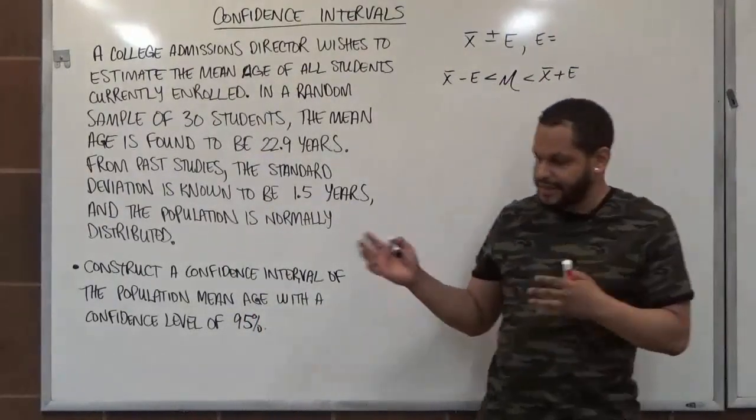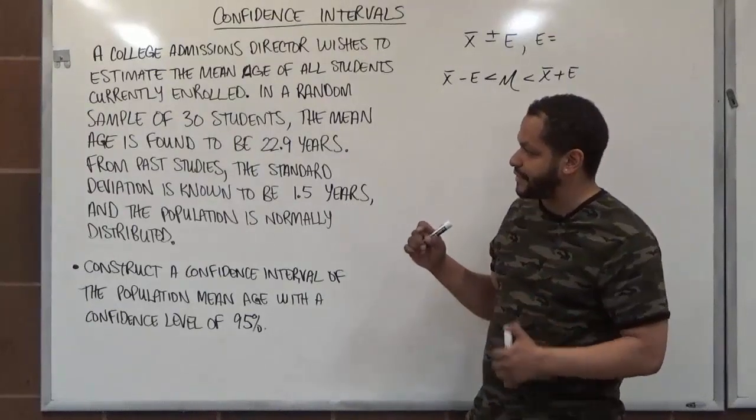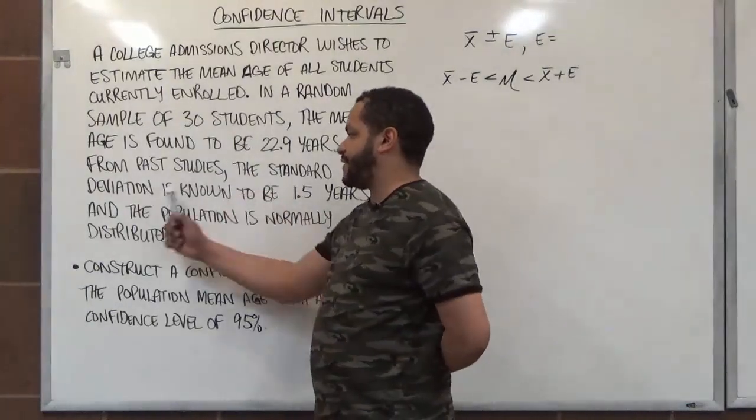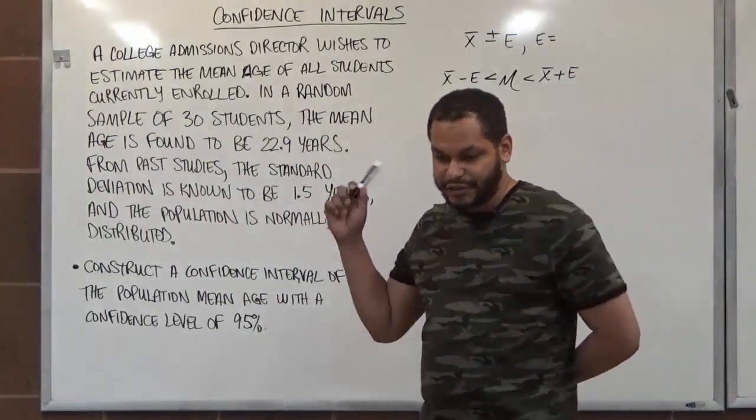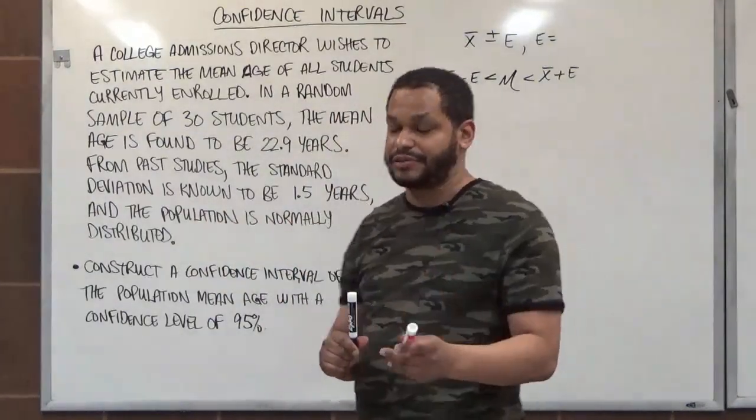Now in this case, for this problem, the condition tells us, because the standard deviation is known to be 1.5 years, we know that we're going to do this with a z-score, not a t-distribution.